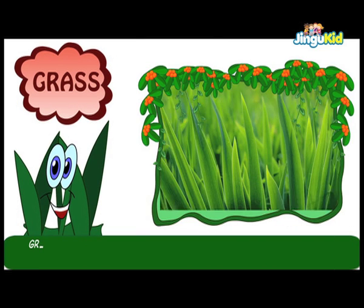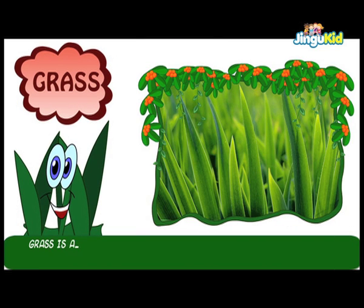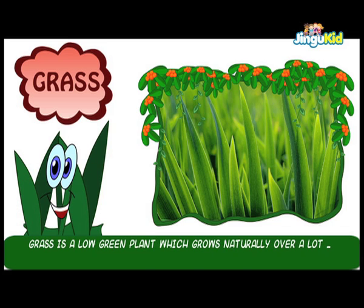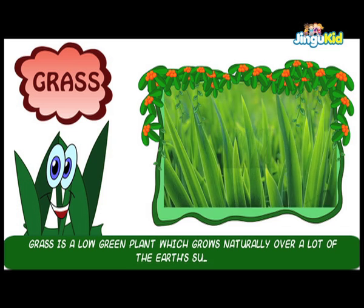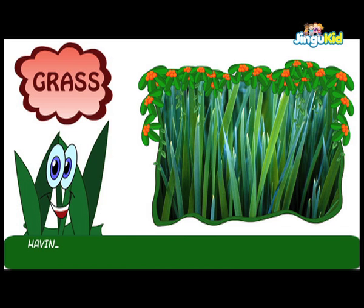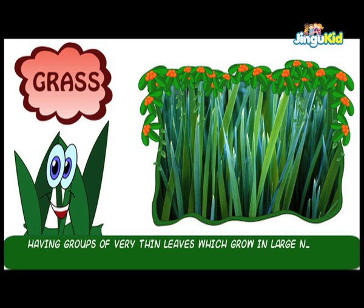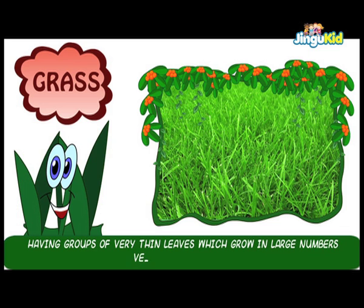Grass. Grass is a low green plant which grows naturally over a lot of the earth's surface, having groups of very thin leaves which grow in large numbers very close together.